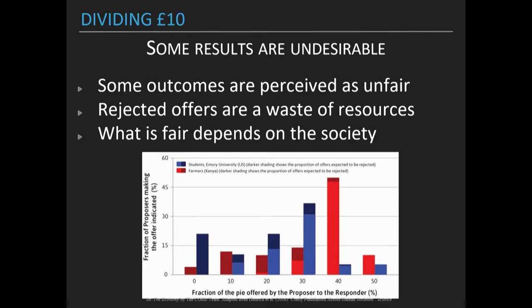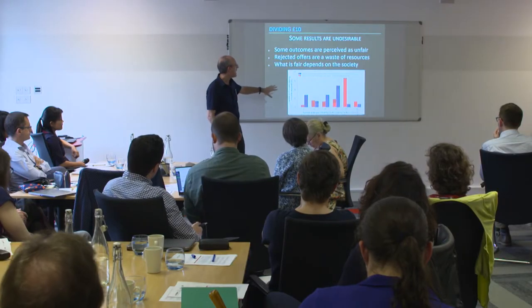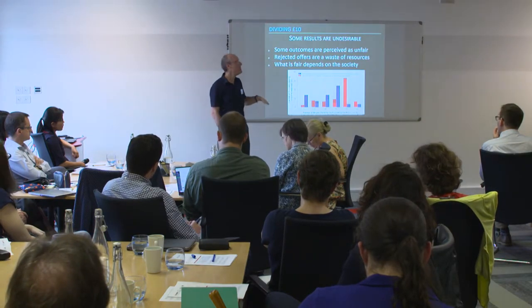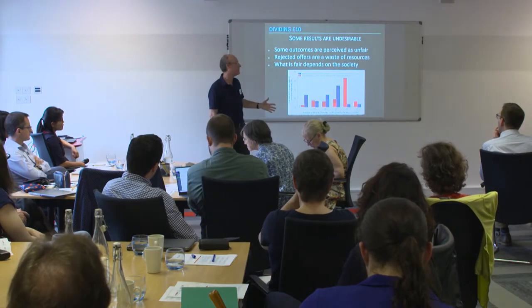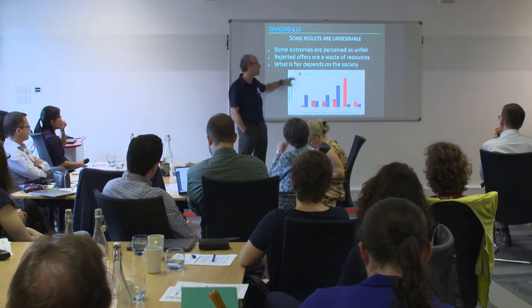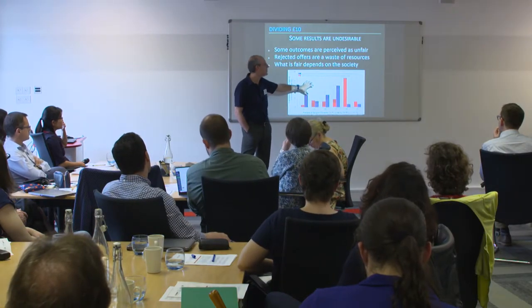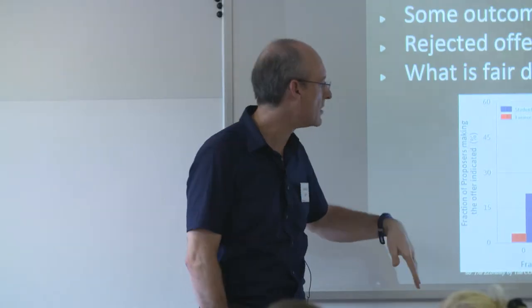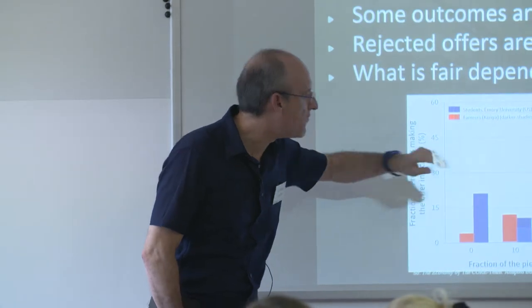You can connect this closely with experiments done in different societies — this comes from the chapter. Not only is wasting offers common to everybody, but what is fair and unfair may depend on society. This is the same game played with Kenyan farmers and with students of Emory University. The pattern is similar, but there is a higher concern for equality or fairness among farmers in Kenya, who offer more equal divisions.